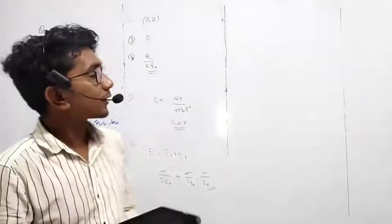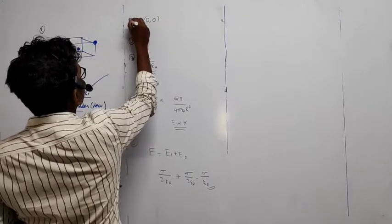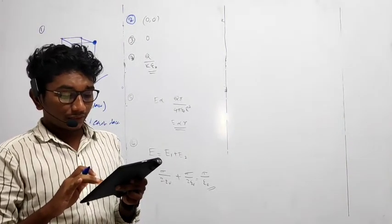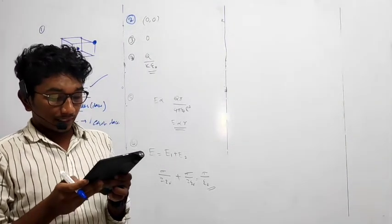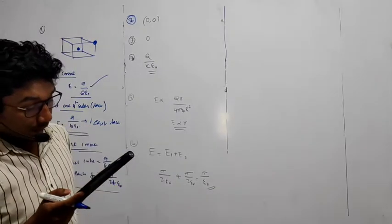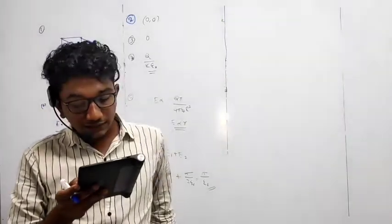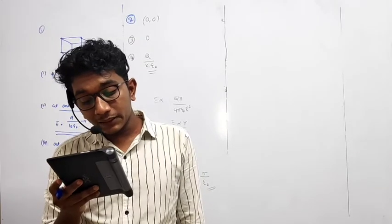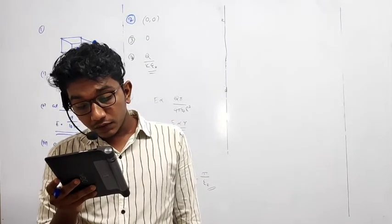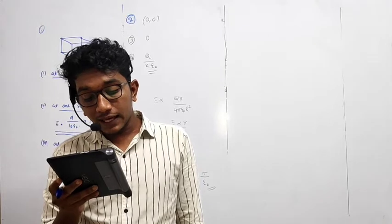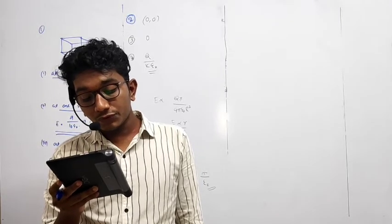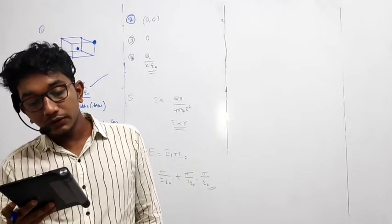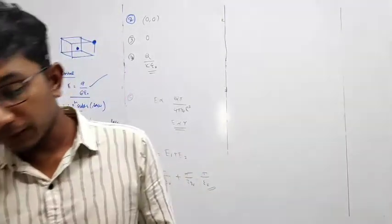The second question, question number 2. It is a theory kind of question, it is an easy question. A dipole is placed in a shell as shown, find the electric flux emerging out of the shell in a hypothetical sphere of radius R as shown in theta. So how much will be the value? It will be 0.